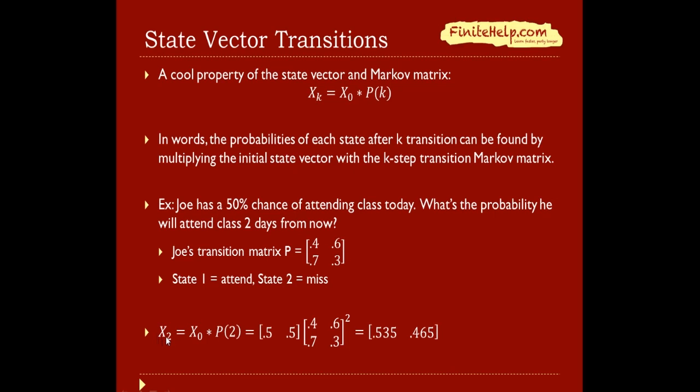So we have X2, which is the same thing as X0 times P2. We take 0.5 and 0.5, from the fact that Joe has a 50% chance of attending today. We're going to take that times P2. I didn't show the steps of multiplying, but here is what comes out. We're trying to find the probability that he will attend class, so this is X2 where he attends, which is 0.535.